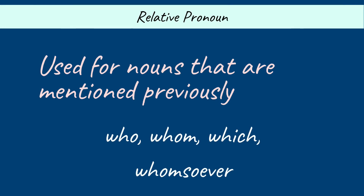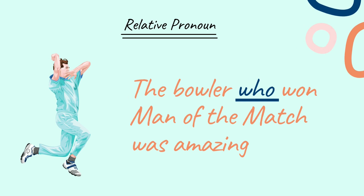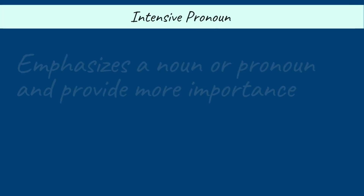Number three: Relative pronoun. It is used for nouns that are mentioned previously and can be used to join two sentences. Examples: who, whom, which, whomsoever. For example: 'The bowler who won the man of the match was amazing.' Here, the relative pronoun 'who' is used to refer to the bowler again.